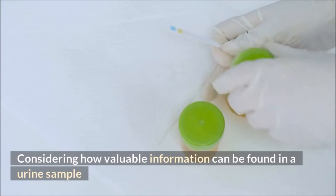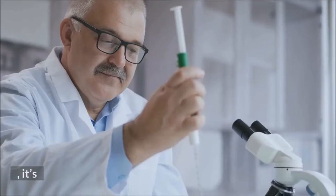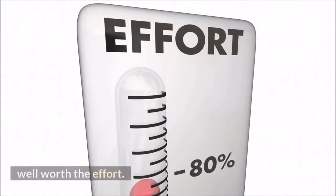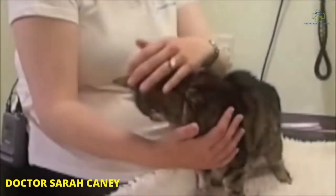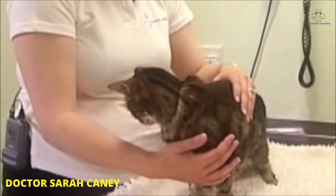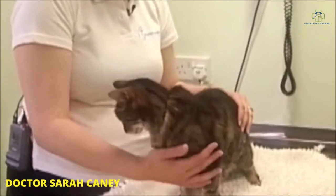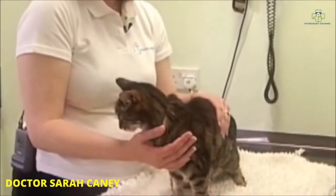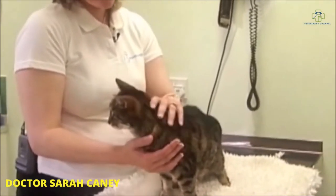Considering how valuable information can be found in a urine sample, it's well worth the effort. In general, the quickest and easiest way to get a urine sample from a cat is to do a procedure called cystocentesis.